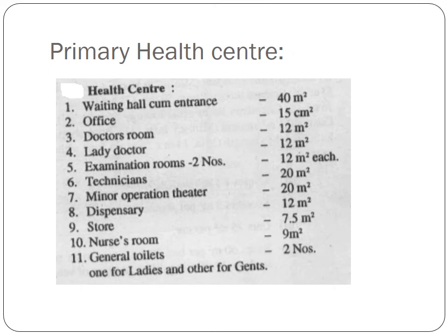The next problem is the primary health center. A primary health center has common rooms such as waiting hall, office, doctor's room, ladies doctor's room, examination room, technician room, minor operation theater, dispensary, store, nurse room, and toilets. These are the basic minimum area values that we take.